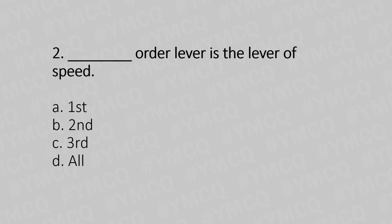Second question: Which order lever is the lever of speed? Option A: first order lever. Option B: second order lever. Option C: third order lever. Option D: all. The answer is Option C, third order lever.